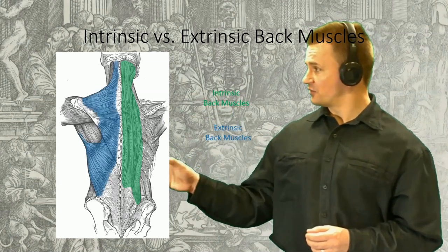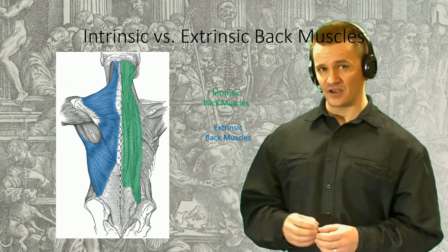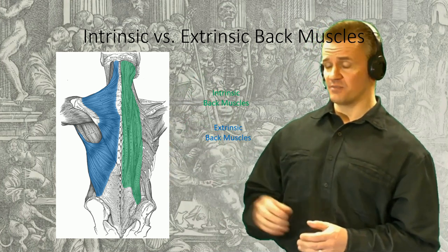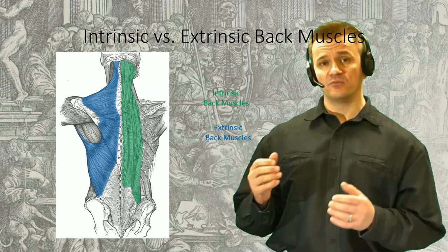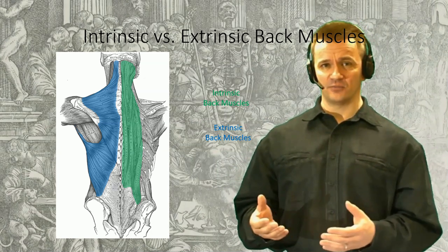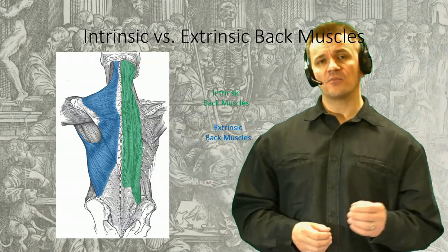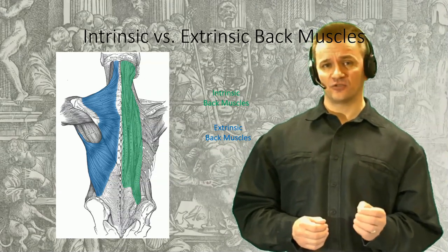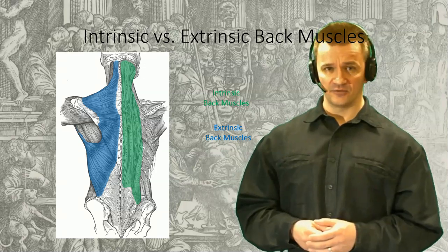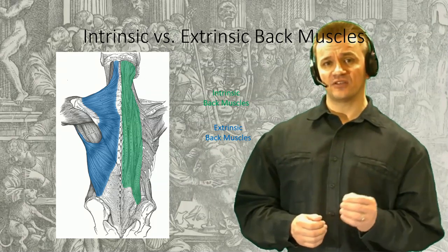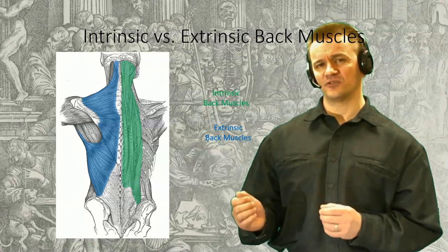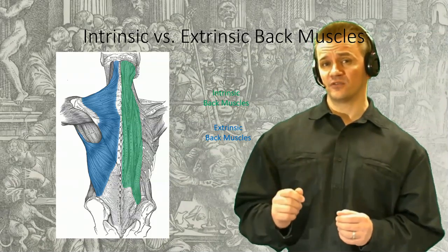The second group, known as the extrinsic muscles of the back, originate off the vertebral column but insert on bones of the appendicular skeleton. They are therefore involved in movements of the upper limb, using the vertebral column as an anchor for the pull of muscle. For the most part, they are innervated by the ventral primary rami, or principal anterior branch off the spinal nerve. As you progress through the dissection superficially, you'll generally encounter the extrinsic muscles first, so these will be the focus of the first session.